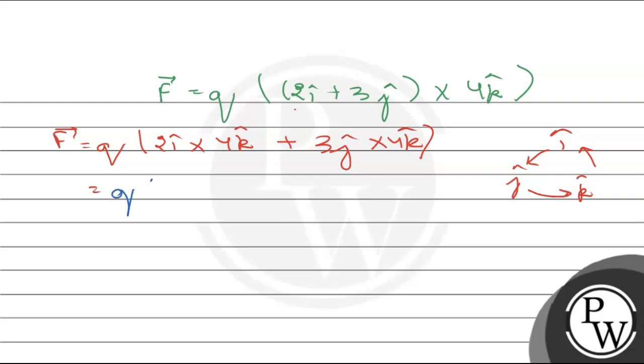Then, this equals to q times (8i cross product k is clockwise, so it will be minus j-cap plus 12i-cap). That means force vector will be equals to q times (minus 8j-cap plus 12i-cap).